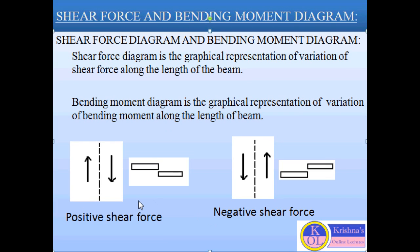When the shear force is acting downward at the right hand side of the section and upward at the left hand side, that shear force is considered as positive. Similarly, when the shear force is acting upward at the right hand side and downward at the left hand side, that shear force is considered as negative. For the bending moment, the anti-clockwise moment is positive and the clockwise moment is negative.